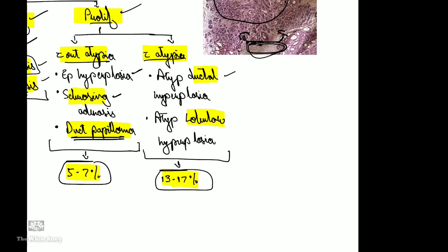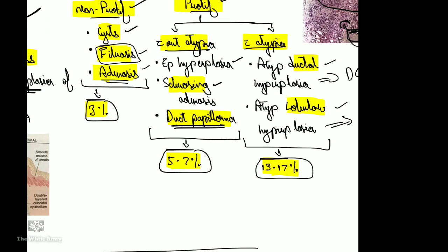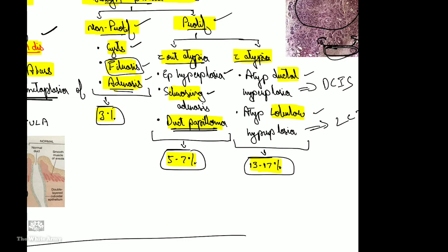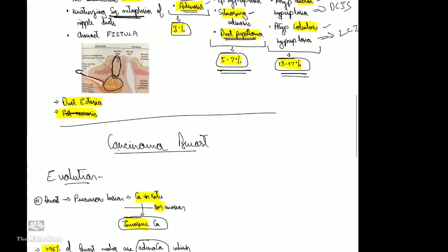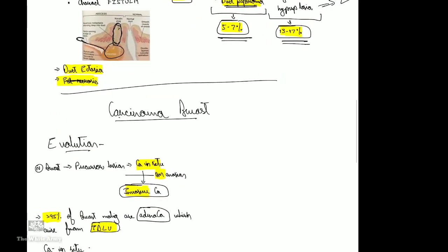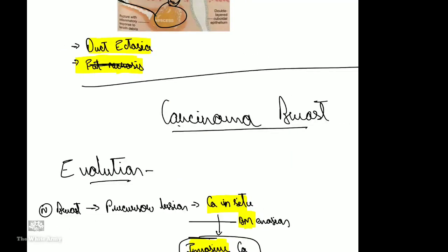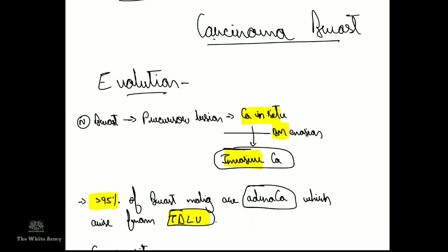With atypia are atypical ductal hyperplasia and atypical lobular hyperplasia — these resemble DCIS and LCIS respectively. The significance of these epithelial lesions relates to risk of malignancy: 3% in non-proliferative lesions, 5 to 7% in lesions without atypia, and 13 to 17% in lesions with atypia.